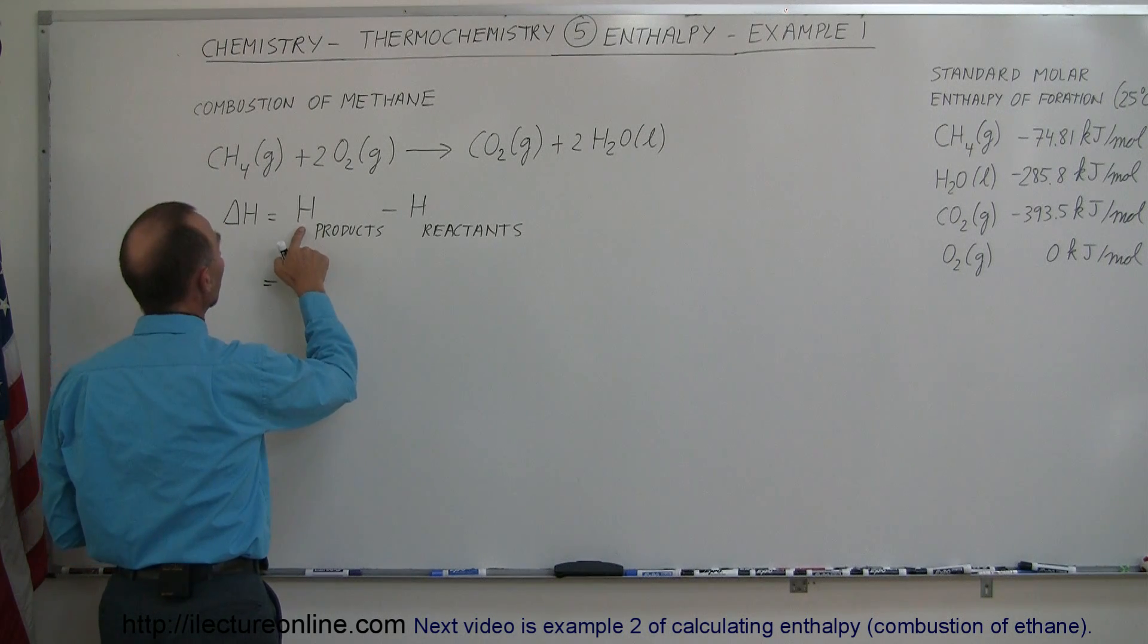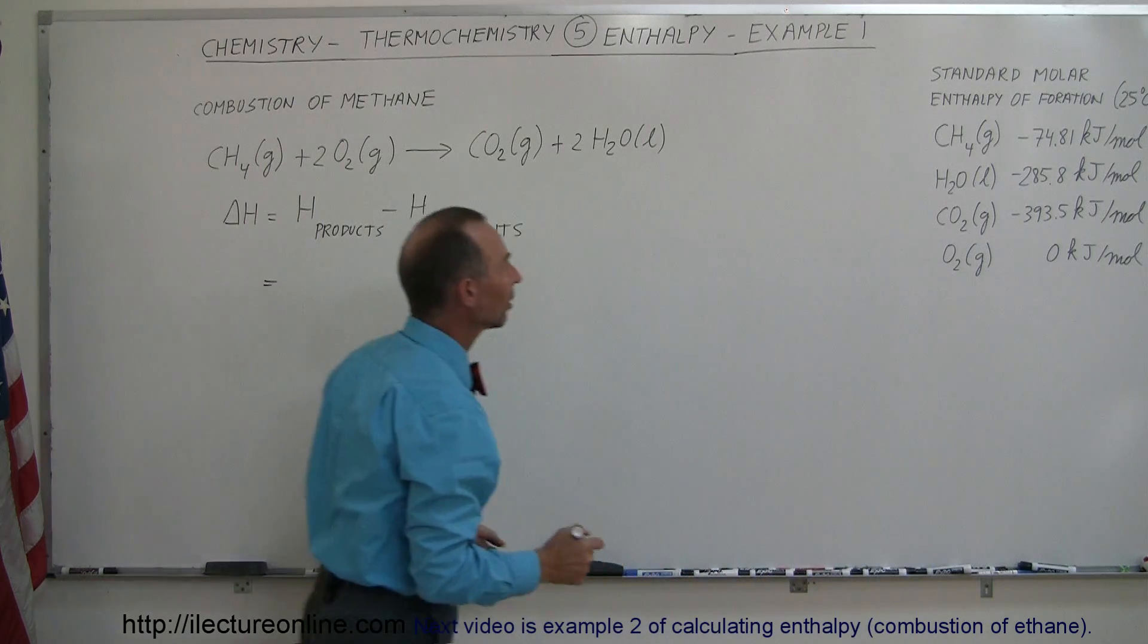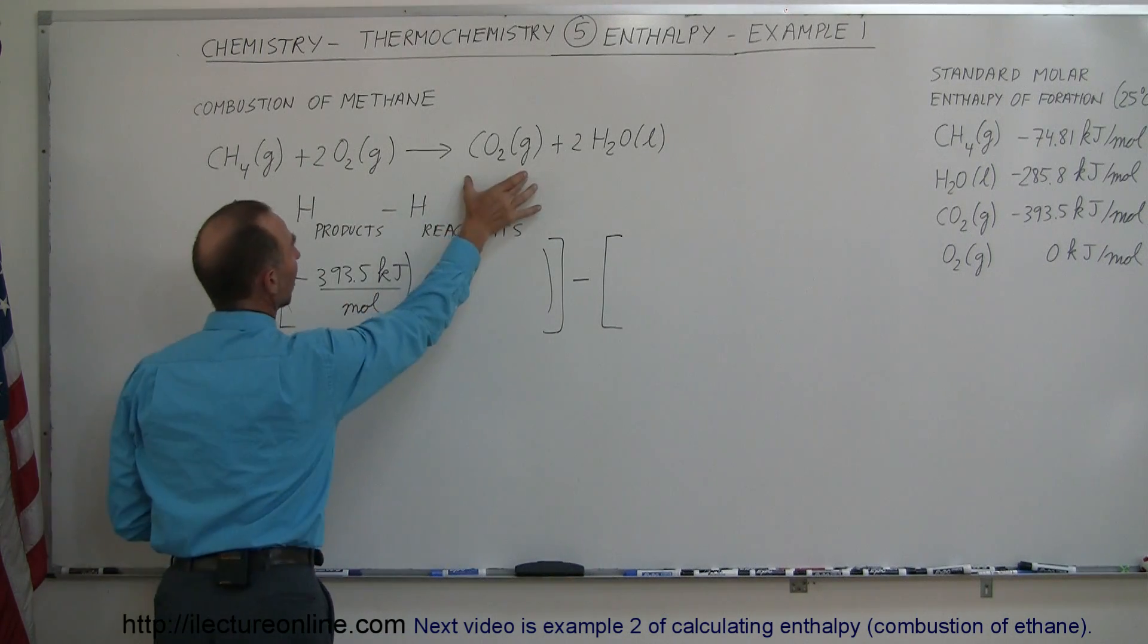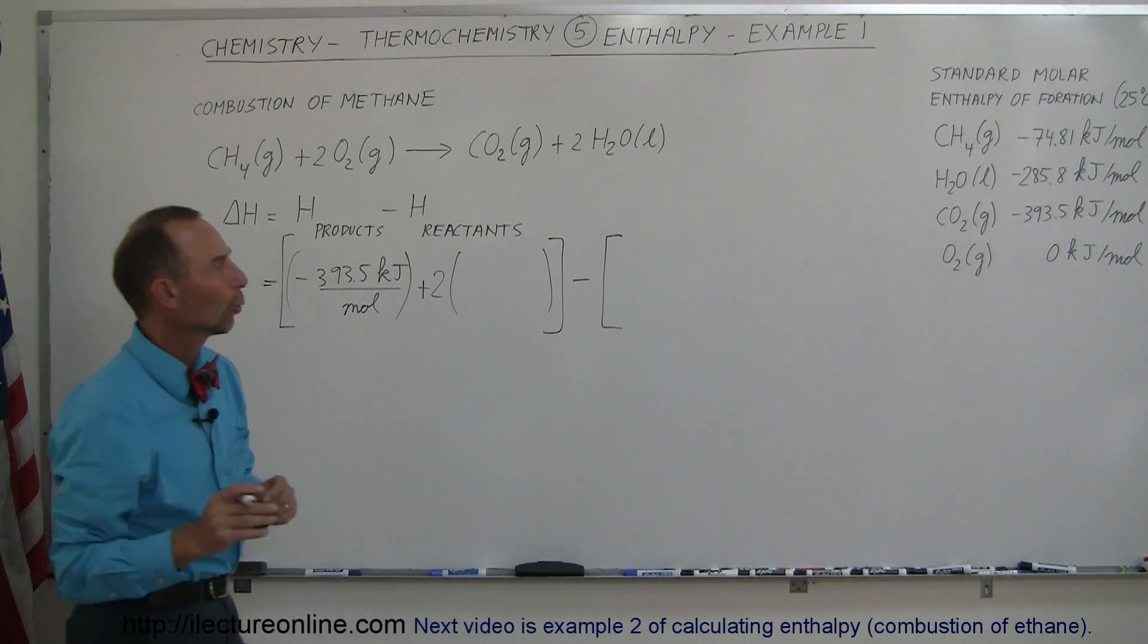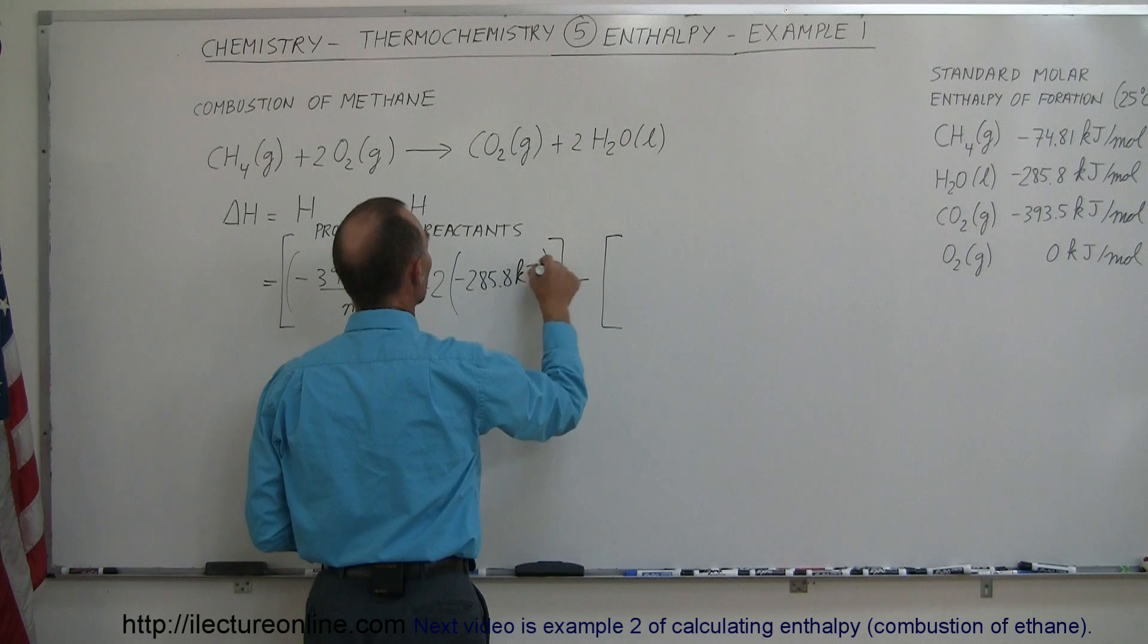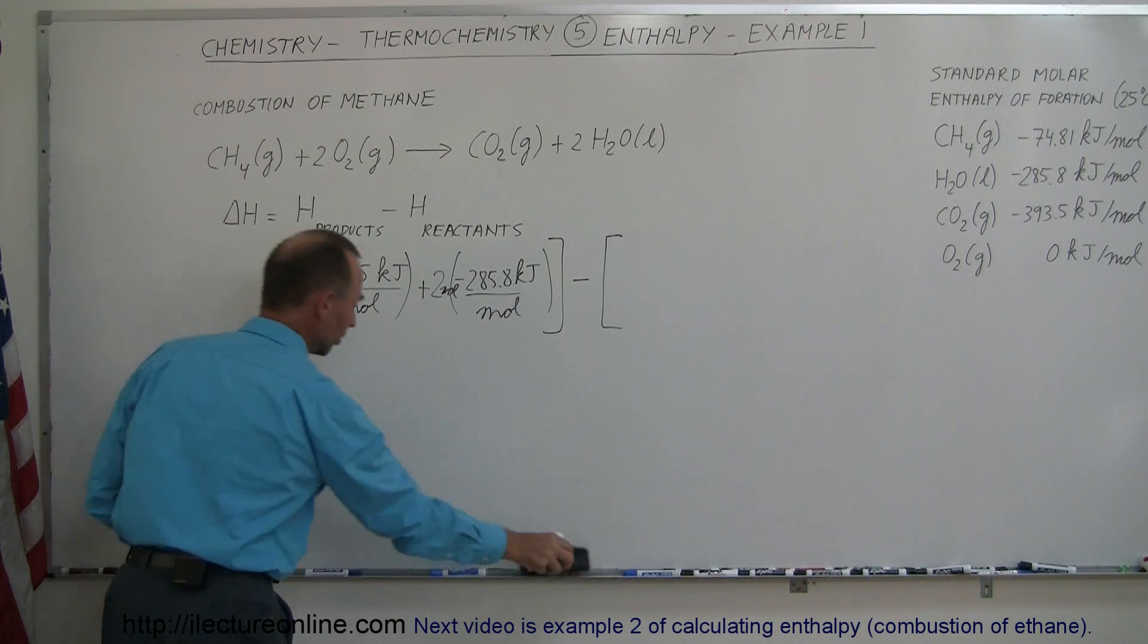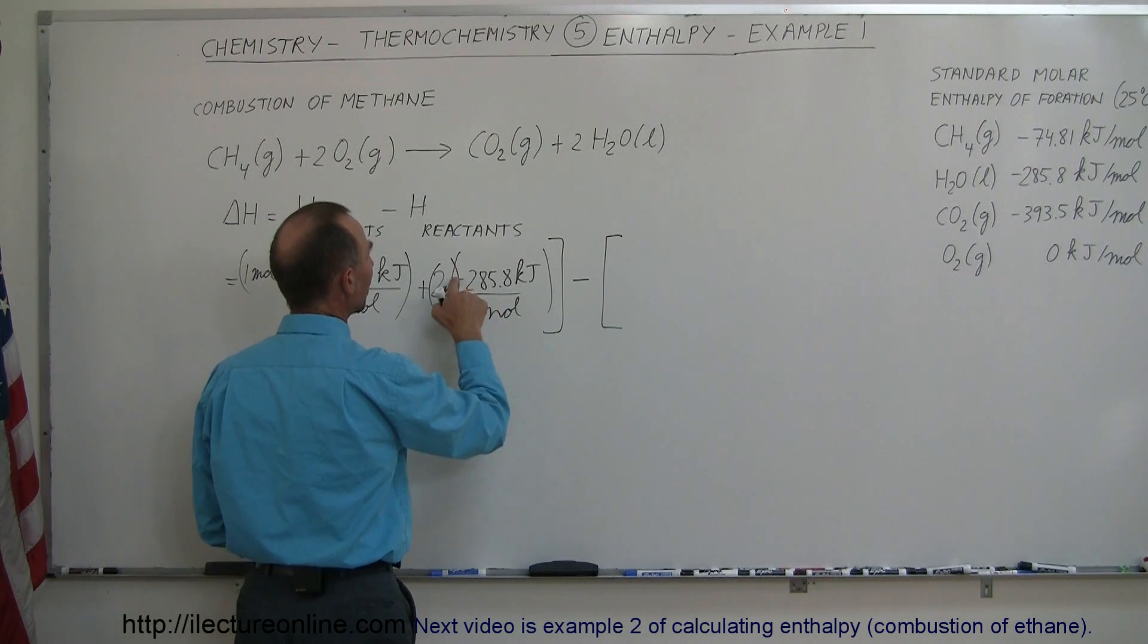So this is equal to the enthalpy of the products. What products do we have? Well they're right here, carbon dioxide, and the enthalpy of formation is minus 393.5 kilojoules per mole. We have carbon dioxide, which is right here, and there's the other product, which is water. Notice we have two molecules, so it's two times the enthalpy of formation for water, H2O, that's minus 285.8 kilojoules per mole. But since we have two moles here and one mole here, this is equal to one mole multiplied times this per mole, and this is two moles multiplied times this per mole.